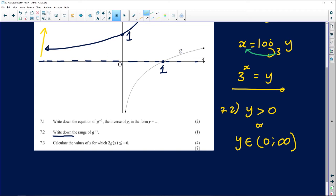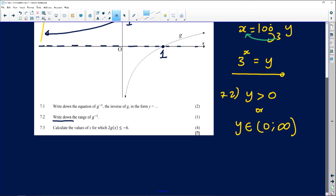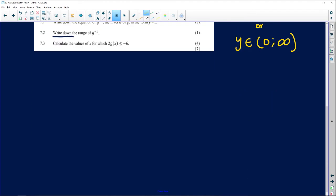7.3, now let's go to 7.3. It's an awesome question. It says to us we need to calculate the values of x where 2 times g(x) is smaller than negative 6. That's very interesting. So let's try and figure it out algebraically. 2 times g(x) smaller than negative 6. If we divide both sides by 2, it just means we want where the graph of g is smaller or equal to negative 3.